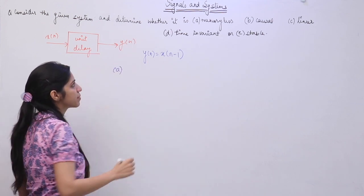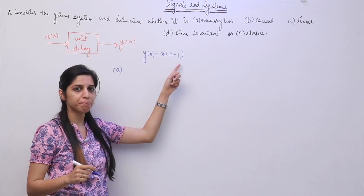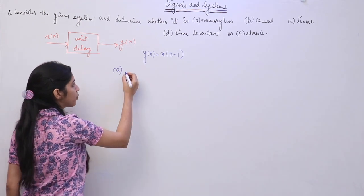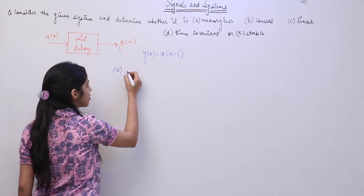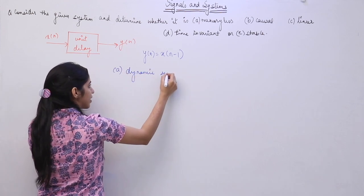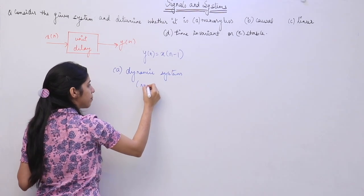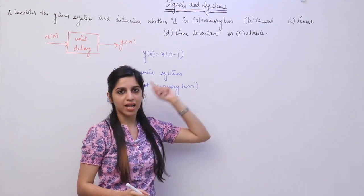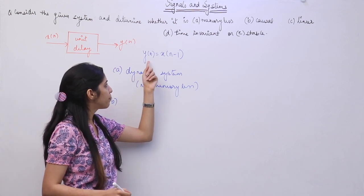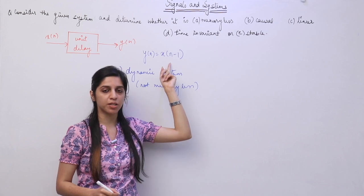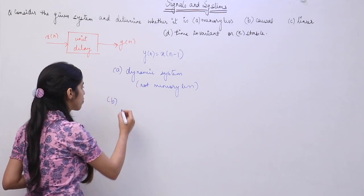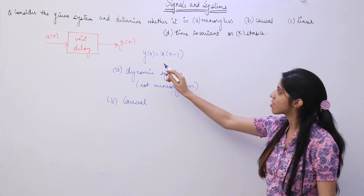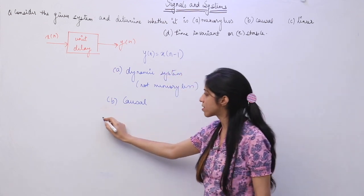Now we check if the system has memory. Since the output depends on previous input — input which occurred one unit time before — the system is going to be with memory; it is a dynamic system, not memoryless. For causality: the output at the present time instance does not depend on future values of the input; it depends on the past value. So this system is going to be a causal system.